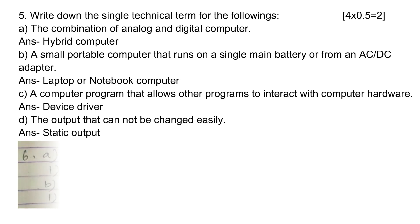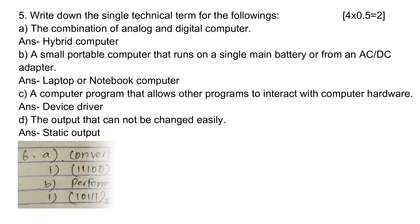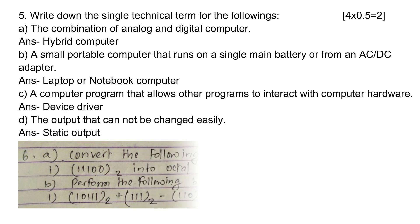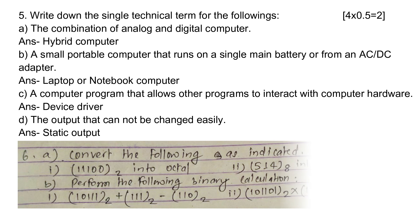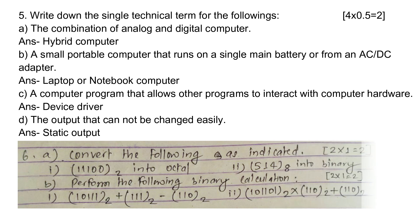Question 5. Write down the single technical term for the following. A. The combination of analog and digital computer — Answer: hybrid computer. B. A small portable computer that runs on a single main battery or from an AC-DC adapter — Answer: laptop or notebook computer. C. A computer program that allows other programs to interact with computer hardware — Answer: device driver. D. The output that cannot be changed easily — Answer: static output.